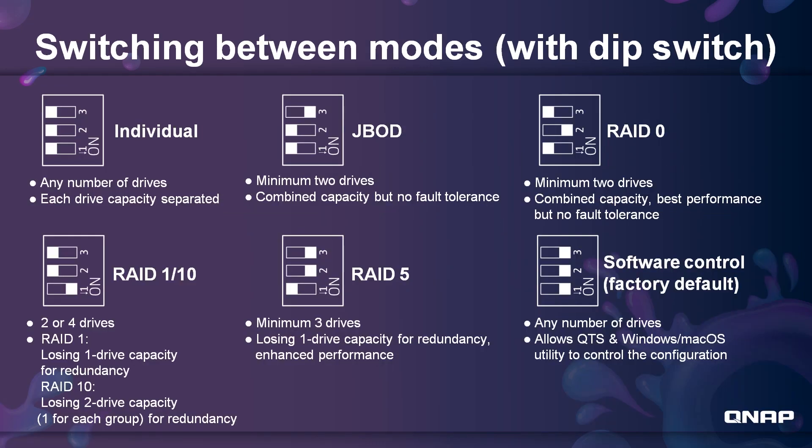Switching between the modes using the dip switch — for individual mode, switch all dips to the left. For JBOD, the third one goes to the right. For RAID 0, the second switch only. For RAID 10 with 2 or 4 drives, set dip switch number 1 only. For RAID 5, requiring a minimum of 3 drives with one drive for redundancy, set the second and third switches to the right. Lastly, software control mode for any number of drives allows control from QTS, Windows, or macOS.